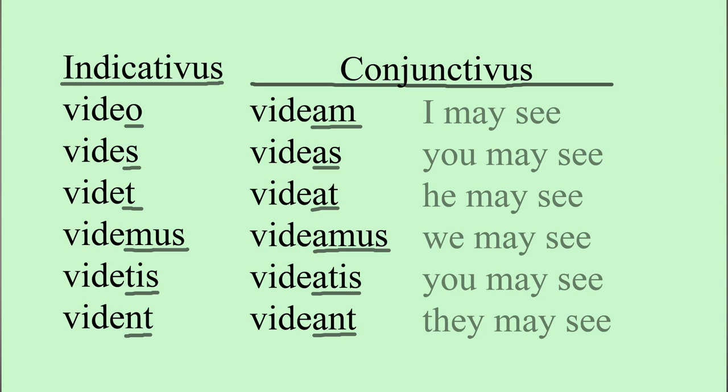Videam, videas, videat, videamus, videatis, videant. So here we can see that the way of expression in Latin is very different from English. We are used to employing various auxiliary words to express the notion of a possibility, whereas in Latin we merely change the personal endings of certain words.